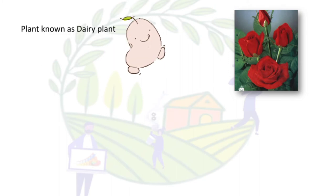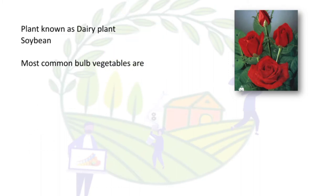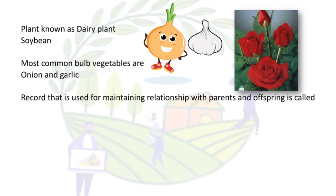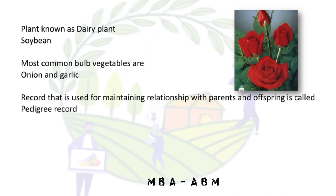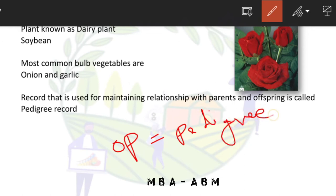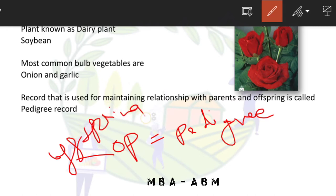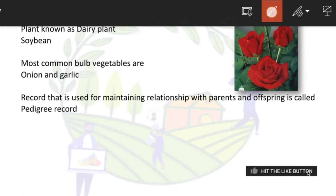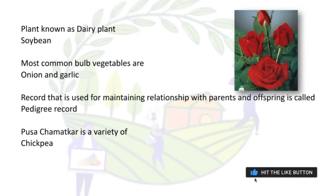The plant also known as the dairy plant is soybean. The most common bulb vegetables are garlic and onion. The record used for maintaining the relationship between parent and offspring is called pedigree — remember: O for offspring, P for parent, OP equals pedigree.